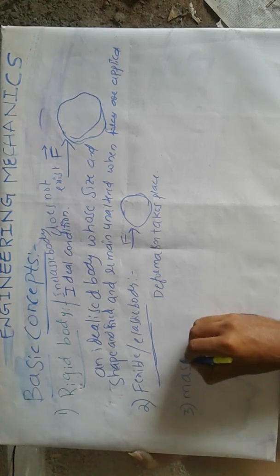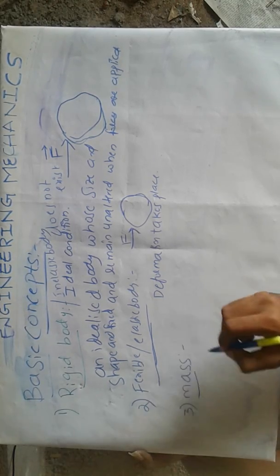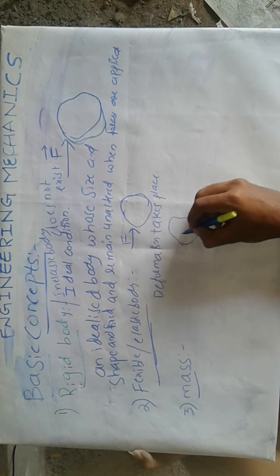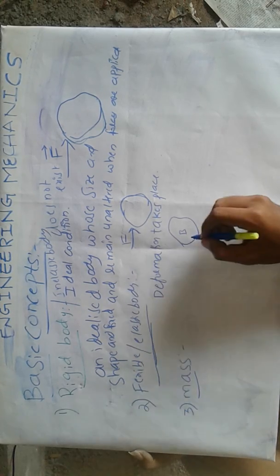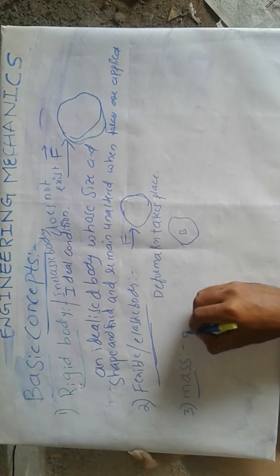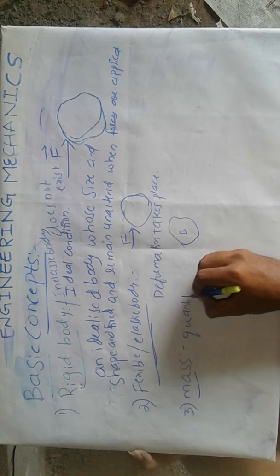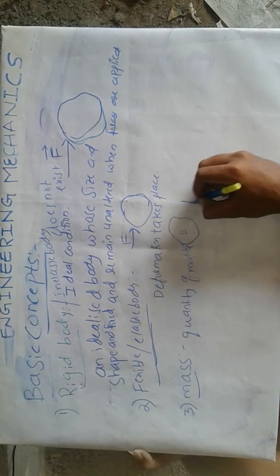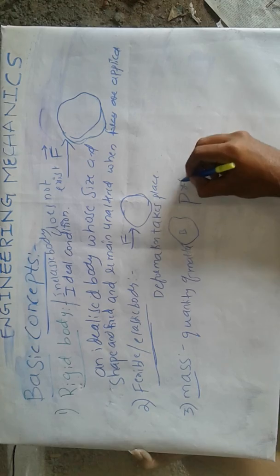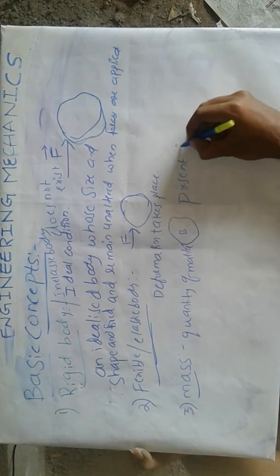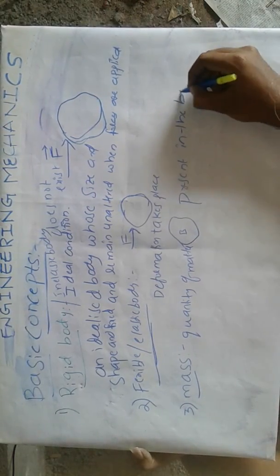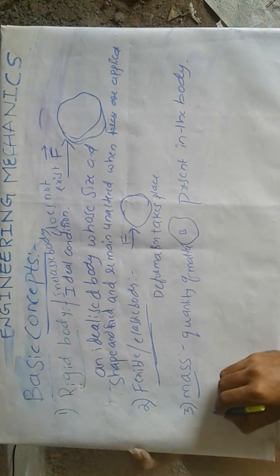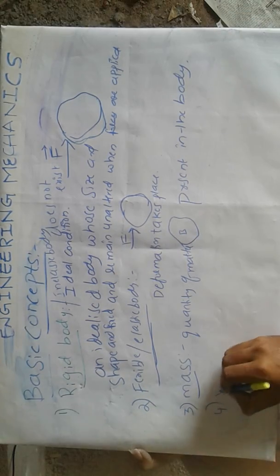Next, mass. Mass is nothing but the quantity of matter present in the body. The quantity of matter present in the body is said to be mass.